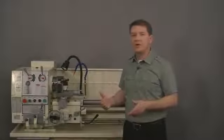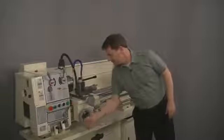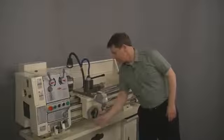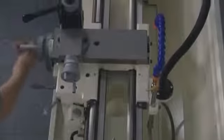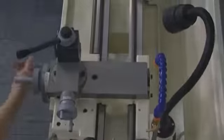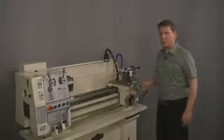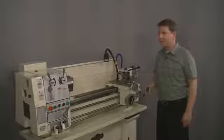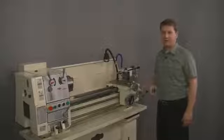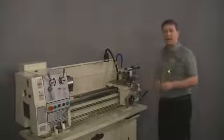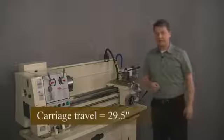Next we'll move the carriage all the way to the opposite or the tailstock end of the lathe. I'll raise the threading dial up out of the way. And now that the carriage is the farthest to the right our machine will travel, I'll measure the distance between the mark we made previously and the left side of it. And it looks like we've got about 29 and a half inches of travel in the carriage.